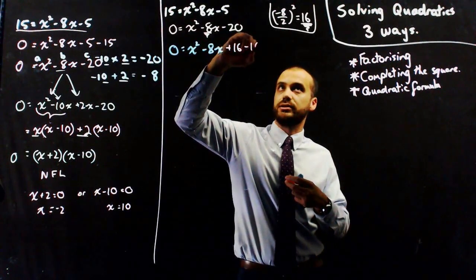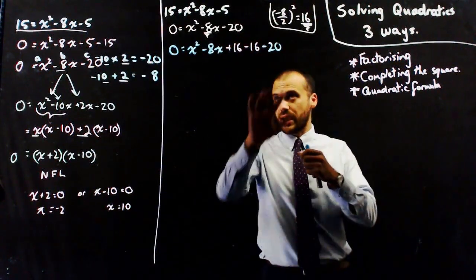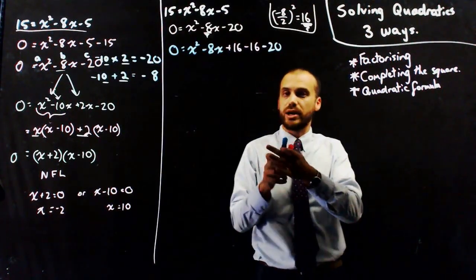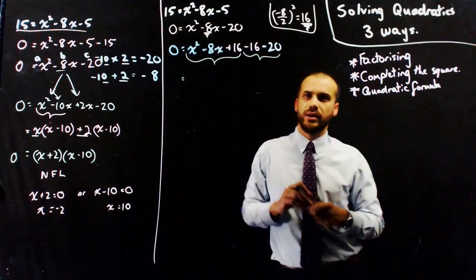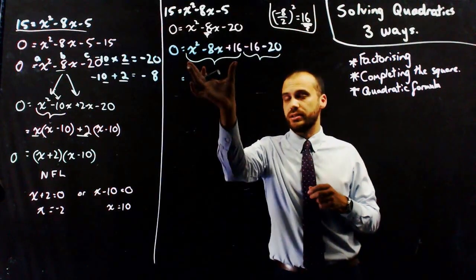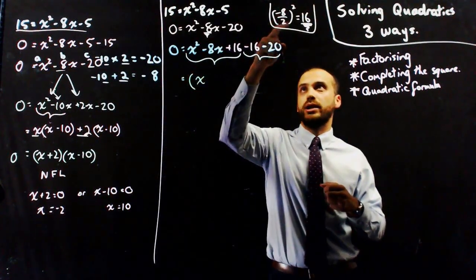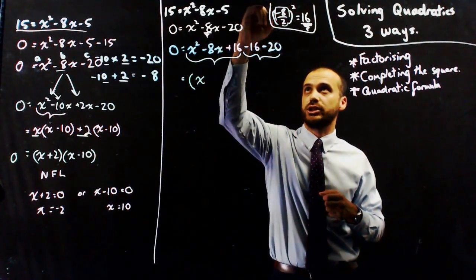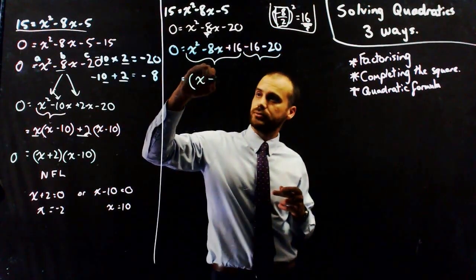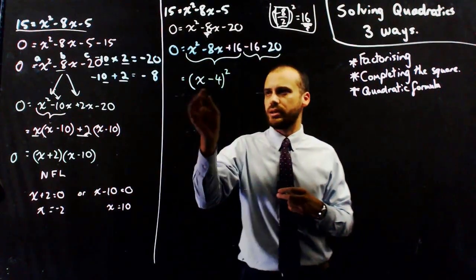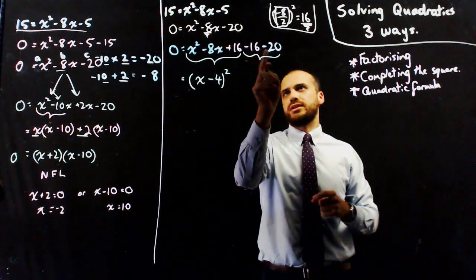I'm going to subtract 16, and then the thing that's left over here is the negative 20. By adding and subtracting it, I haven't made any material difference to the equation, but it has allowed me to break it into two component parts — this bit and this bit. When we complete the square by doing this, this is going to become a perfect square: x minus 4 squared. The value in the bracket is negative 8 divided by 2, which is negative 4. If you expand x minus 4 squared, you'll get x squared minus 8x plus 16 — that is a perfect square. Negative 16 minus 20 is negative 36. I have completed the square.